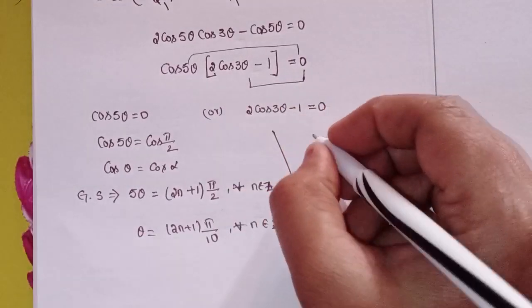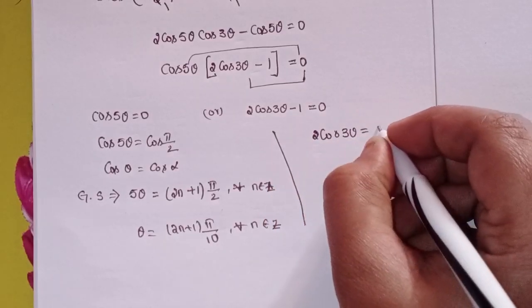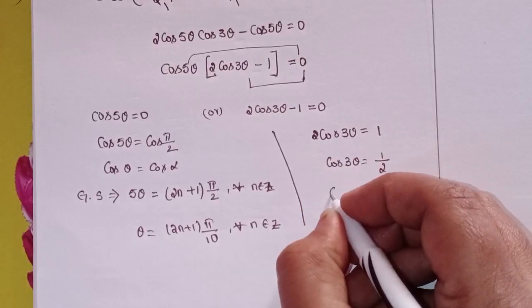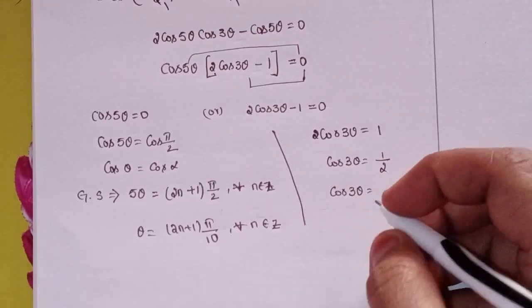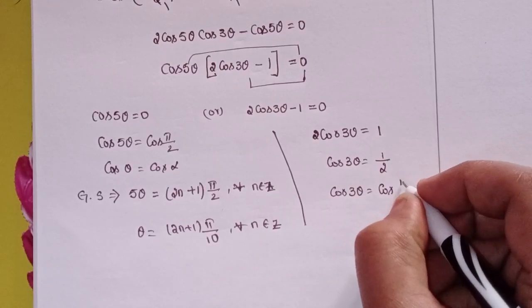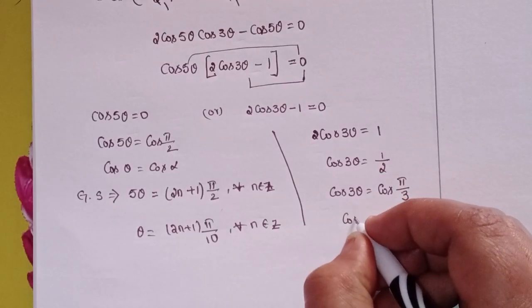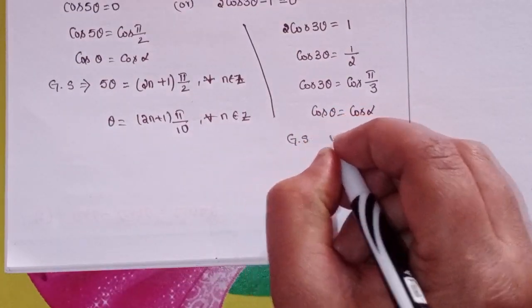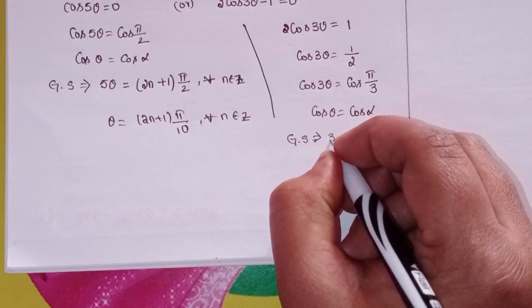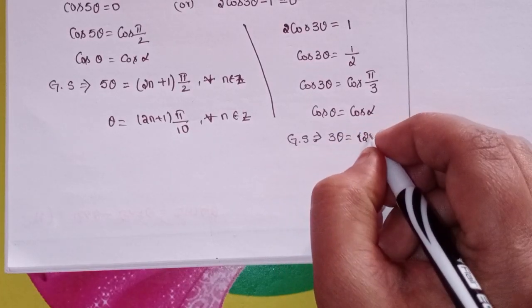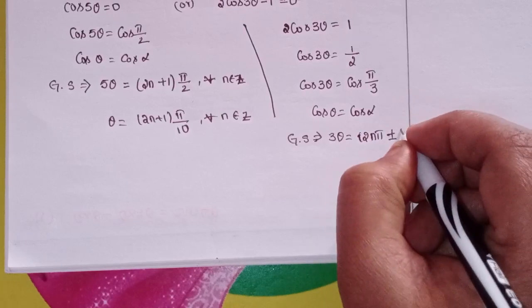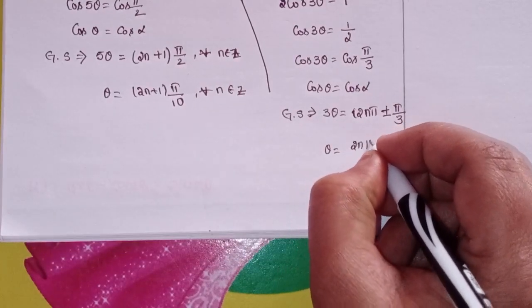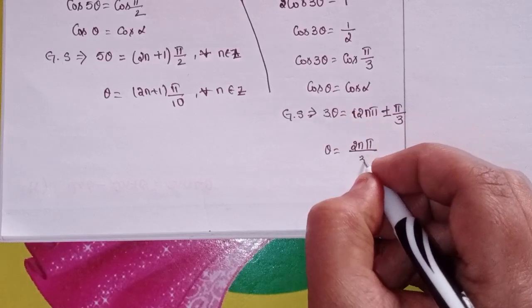Now for the second factor: 2cos3θ = 1, so cos3θ = 1/2. In terms of cosine, cos3θ = cos(π/3). Using cosθ = cosα general solution, 3θ = 2nπ ± π/3.